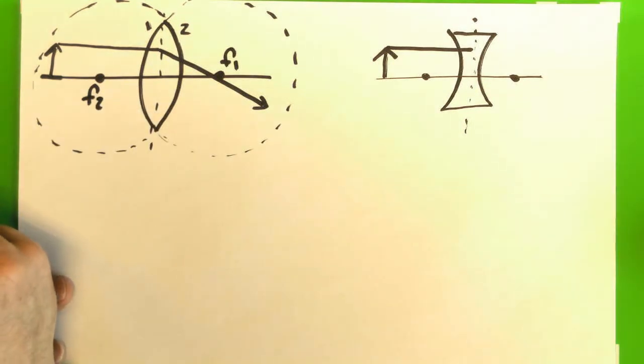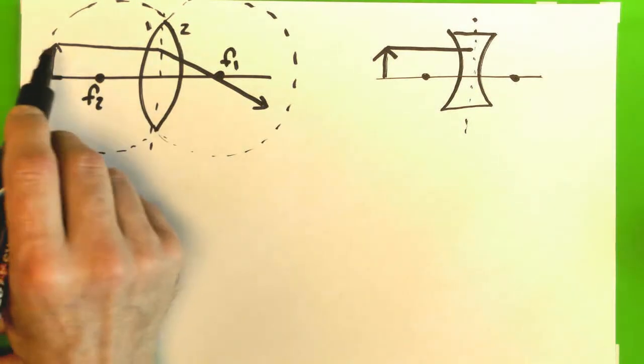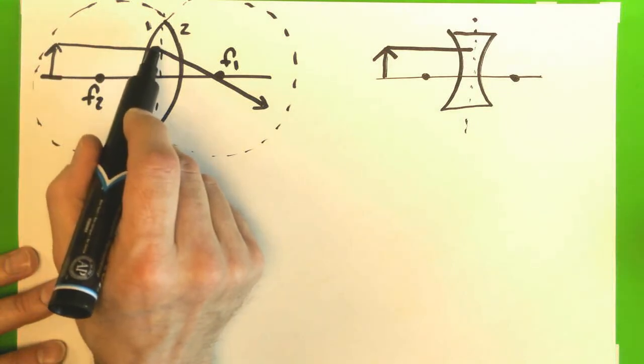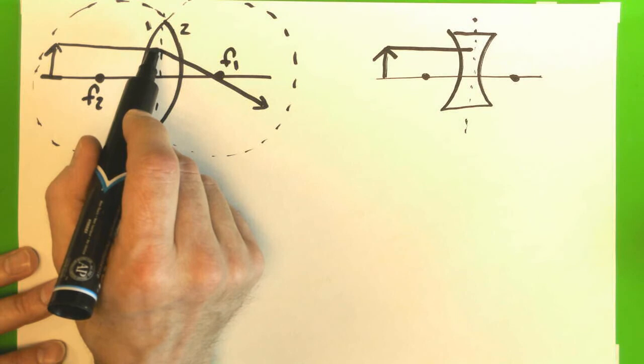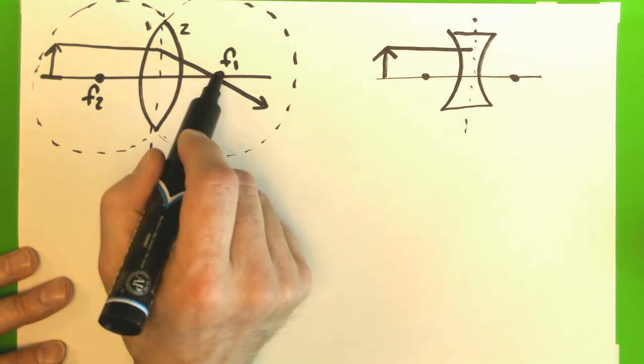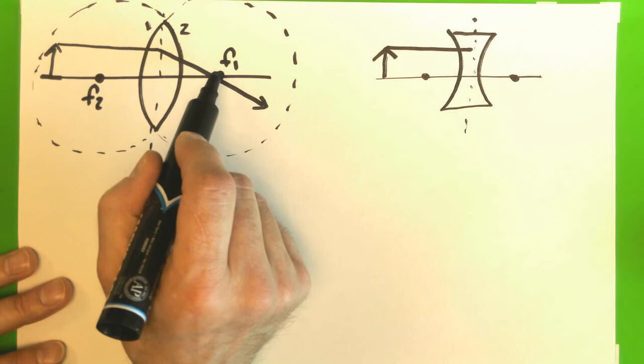So we can restate our principles of these focal rays, or these rays, by saying the parallel ray goes to the lens and then, and I'm going to say this is kind of weird, but it'll make sense in a minute, it's associated with the first focal point.